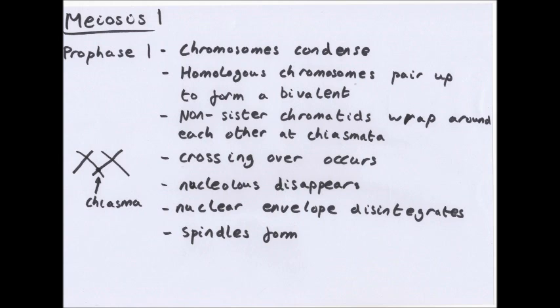A loci is the position of a gene on a chromosome. But these bivalents, two chromosomes, basically have the same genes, one from the father, one from the mother.